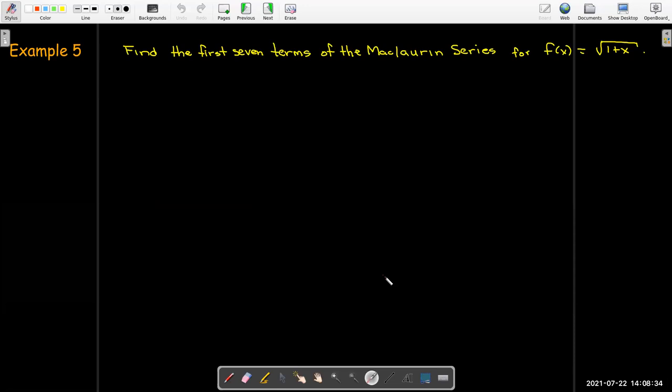So let's look at an example. We'd like to find the first seven terms of the Maclaurin series for f of x equals radical 1 plus x. Now we could go through and take all the derivatives, use the definition of the Maclaurin series, but it's a lot easier if we recognize this as being a binomial series with k equals 1 half. So remember our first coefficient is 1. Our second coefficient is k which is just 1 half.